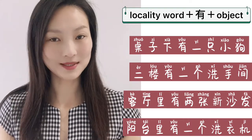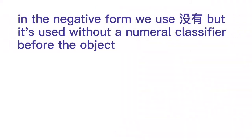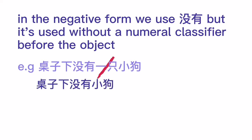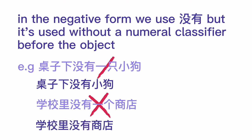But there are two points we must pay attention to. First, in the negative form, we use 没有, but without a numeral classifier before the object. For instance, 桌子下没有一只小狗 — the 一只 must be deleted. The correct sentence is 桌子下没有小狗. Similarly, 学校里没有一个商店 — drop 一个 — we only say 学校里没有商店.